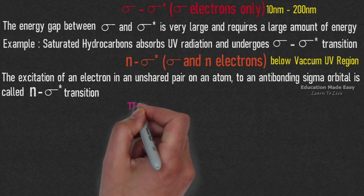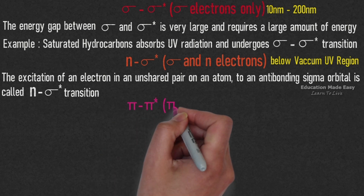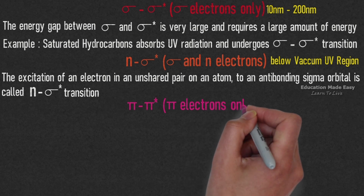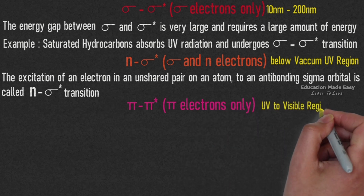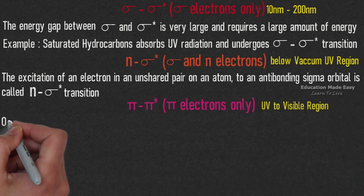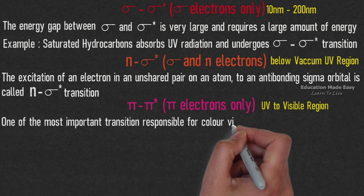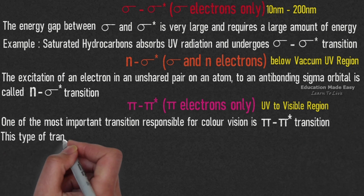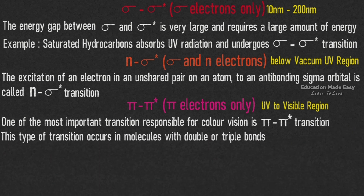The third type of electronic transition is pi to pi star transition. In this type, only pi electrons are involved and it happens from UV to visible region. One of the most important transitions responsible for color vision is pi to pi star transition. This type of transition occurs in molecules with double or triple bonds.